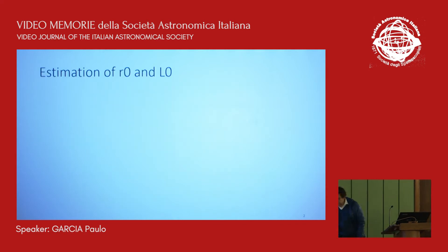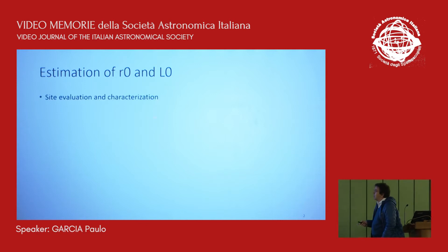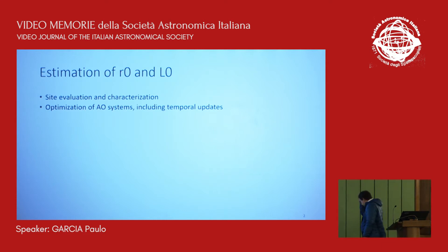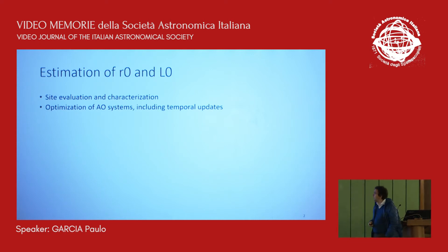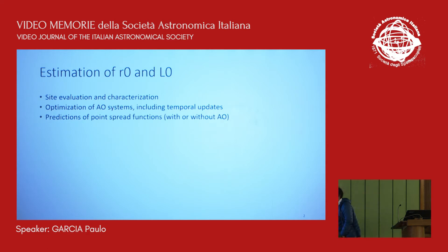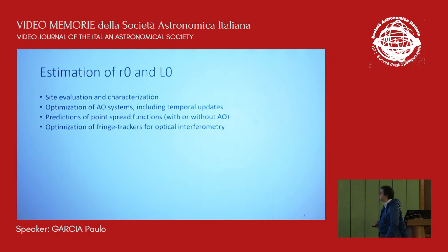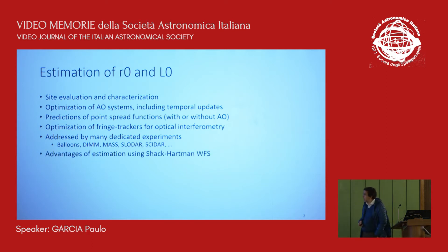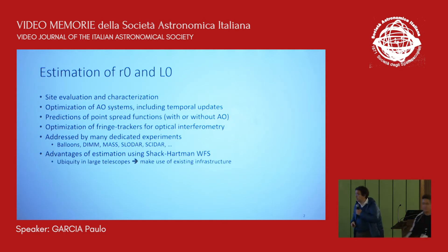Why do we want to estimate R0 and the outer scale? There are obvious needs for evaluation and characterization. If you want to work in an ideal AO system, you need some estimate, and during operation it's important to update these values. If you want to estimate the point-spread function, you need the parameters with or without AO. If you're using a fringe tracker and want to optimize it, it's also important. There are many dedicated experiments like balloons, DIMM, MASS, and others, but we want to use the Shack-Hartmann because they are everywhere.